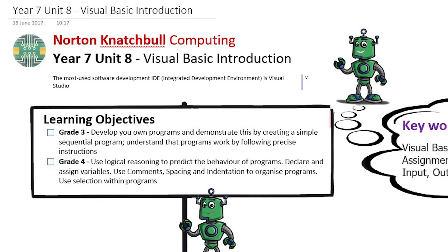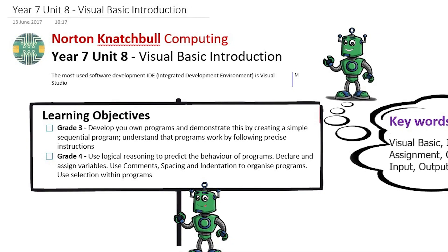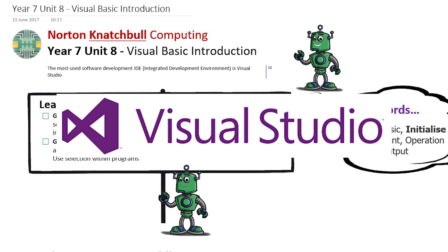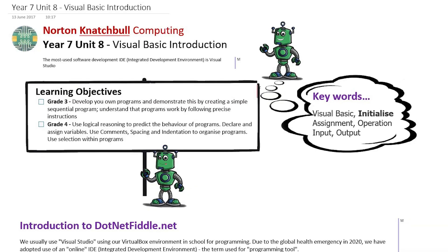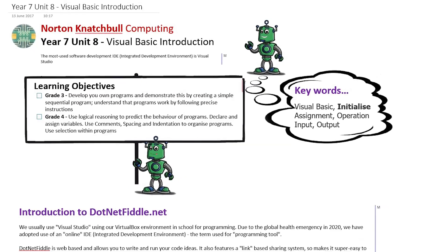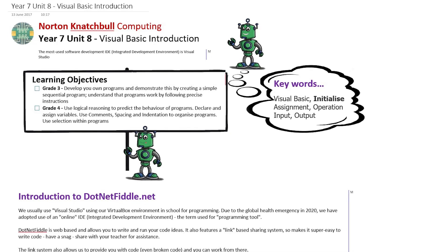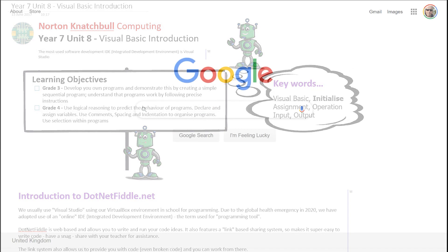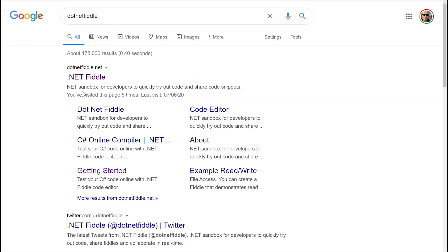Welcome Year 7 to this introduction to programming in Visual Basic. We're going to be using an online programming tool for this demo because we can't currently use the full Visual Studio software we use in school. You'll be converted over to this in class, but this online tool might well be useful for finishing off assignments at home in the future. The tool we're using is called .NET Fiddle and should be given to you as a link in Show My Homework, but you can also find it easily using a web search.